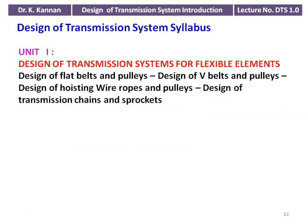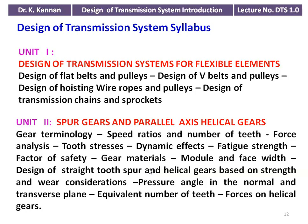In the syllabus of Design of Transmission System, Unit 1 deals with design of flexible elements: design of flat belt and pulley, V-belt and pulleys, hoisting wire ropes and pulleys, and transmission chains and sprockets. Unit 2 covers spur gear and parallel axle helical gear — gear geometry, speed ratios, number of teeth, force analysis, tooth stresses, dynamic effect, fatigue strength, factor of safety, gear materials, module, face width, design of straight tooth spur and helical gears based on strength and wear consideration, pressure angle in normal and transverse plane, equivalent number of teeth, and forces on helical gear.